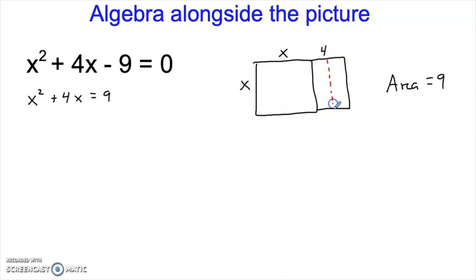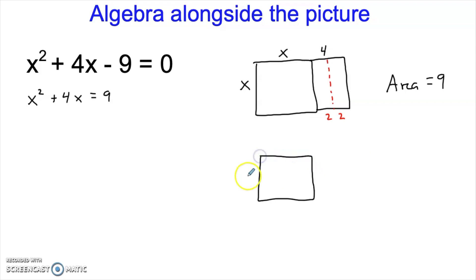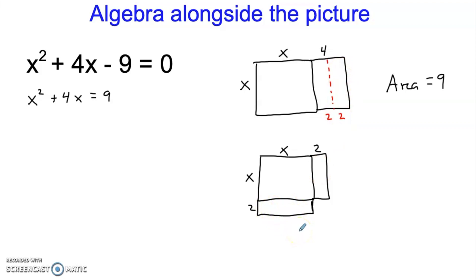x squared is a square, x by x, and 4x is a rectangle that is 4 by x. So you can see that this is the same scenario as the first problem. We have a rectangle, and this 9 represents the area. Now let's do exactly what we did before. Let's split this side into a 2 and a 2. And then let's take this piece, break it off, and swing it around to the bottom. Notice you don't need a fancy animation in order to do this — you can simply redraw the picture with this piece on the bottom.